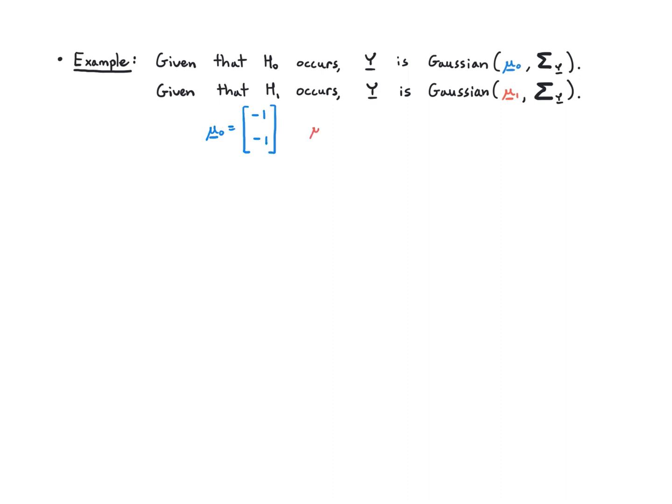The first vector is minus one minus one and the second was plus one plus one, but these could really be anything you wanted. This analysis is not really sensitive to those values. What we're going to arrive at you would get for any vectors that you pick here. Let's say that the covariance matrix is just the identity to make it simple and the hypothesis probabilities are just one half one half, and what we want to do is determine the optimal decision rule.